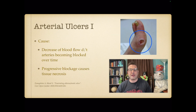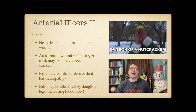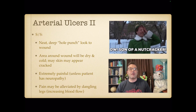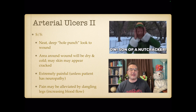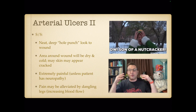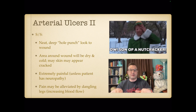The first type of wound is the arterial ulcer. It's caused by a lack of blood flow because arteries become blocked; this progressive blockage causes tissue death. An arterial ulcer has a neat, deep hole-punch look. The area around the wound will be dry and cold, and the skin may appear cracked. They are extremely painful unless the patient has neuropathy. Pain can be alleviated by dangling the legs, because gravity helps increase blood flow past the blockage.